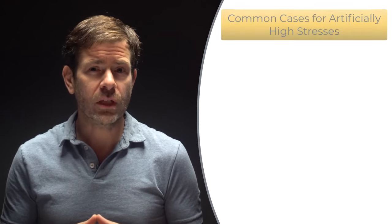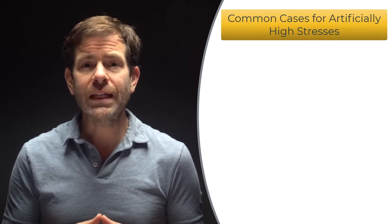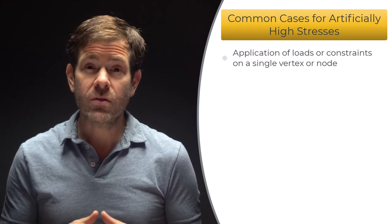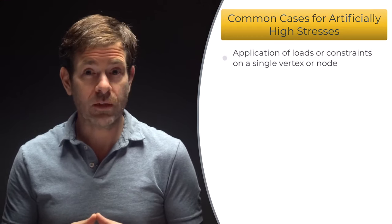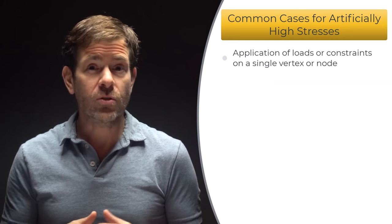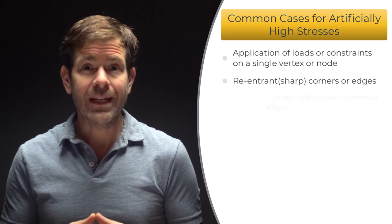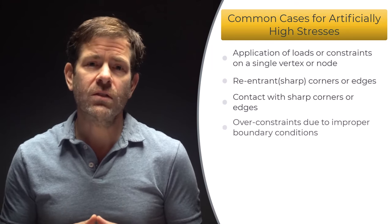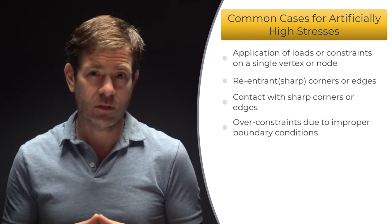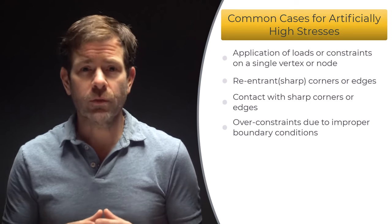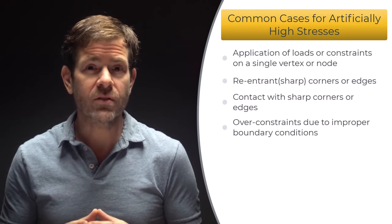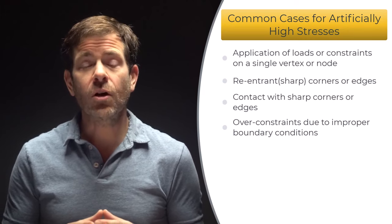Let's summarize the most common cases for artificially high stresses. Applications of loads or constraints on a single vertex or node; re-entrant or sharp corners or edges; contact with sharp corners or edges; and over-constraints due to improper boundary conditions. These are not all inclusive, so there may be other reasons for artificially high stresses, but these are the most common.